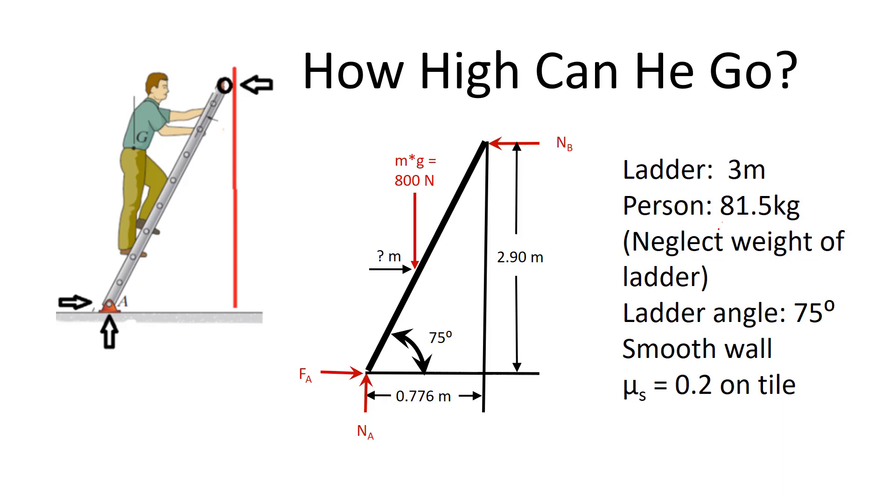Again, the person weighs 81 and a half kilograms. Multiply that by 9.81, I get a force of 800 newtons. But what I don't know in this case, my unknown, is where that force is applied. Because as he goes up the ladder, that force is going to be applied higher and higher up the ladder. And at some point, you'll reach a point where the available friction equals the maximum static friction. If he goes any higher, the whole thing is going to collapse. And we're trying to find where is that point.